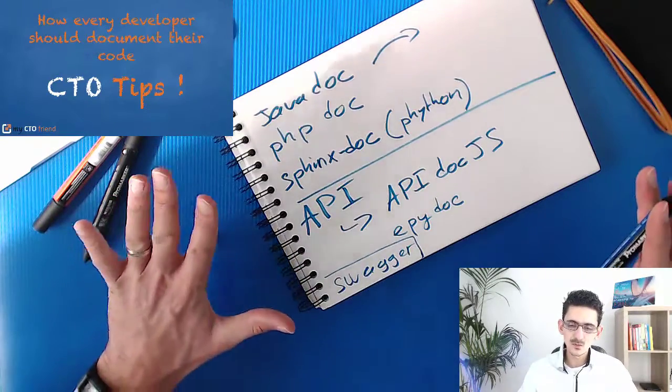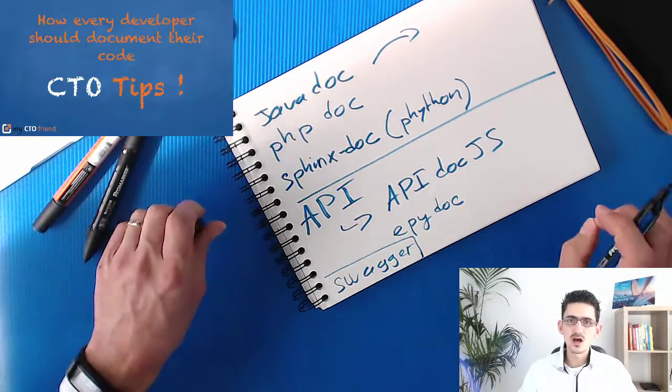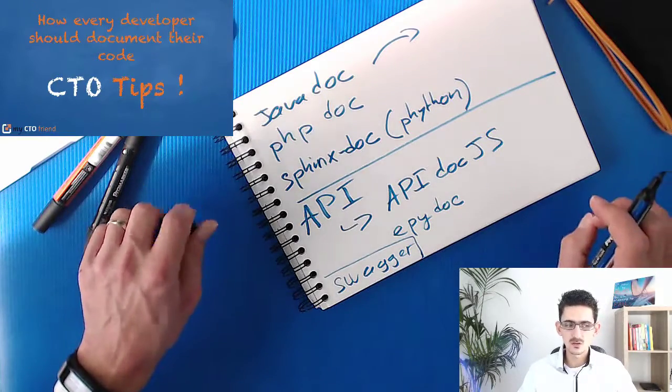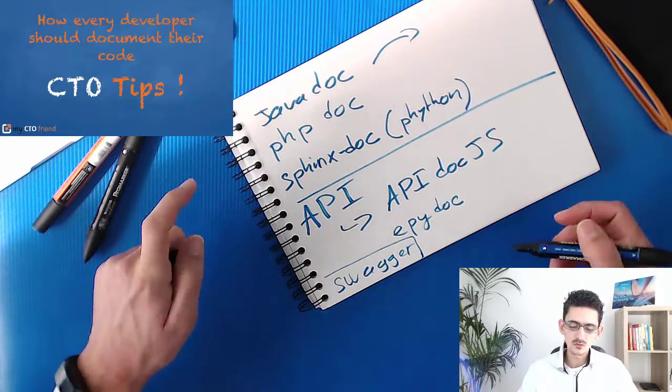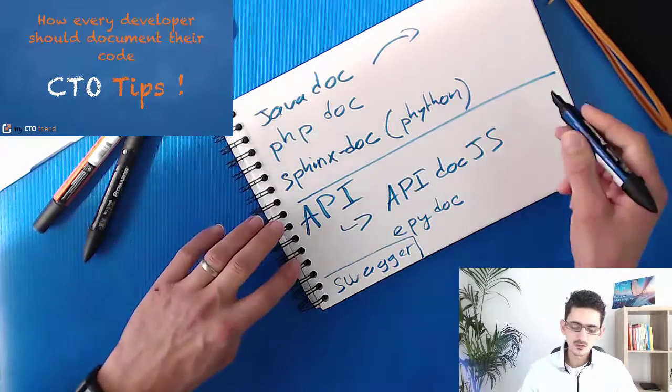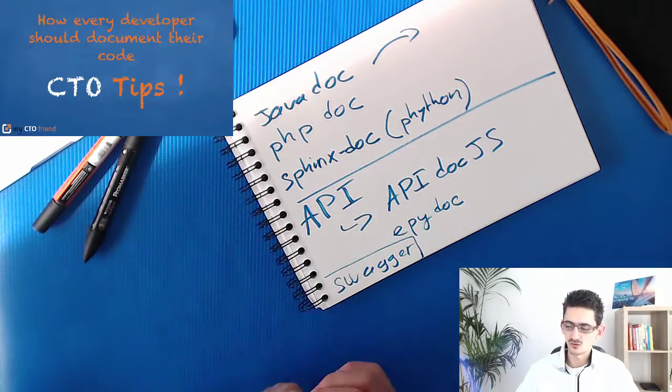A bit of a technical topic today, but important — documentation is the key for a startup, especially if you want to have more developers in the future. It's important for you and your team to have these kinds of tools embedded in your application and source code. I hope it was helpful. As usual, I look forward to seeing you inside my CTO friend for more tools and best practices on how to build a tech startup. Bye for now.